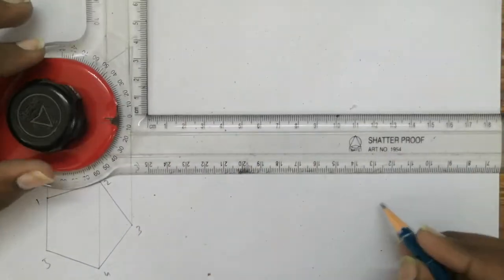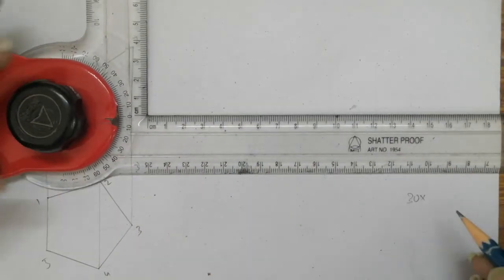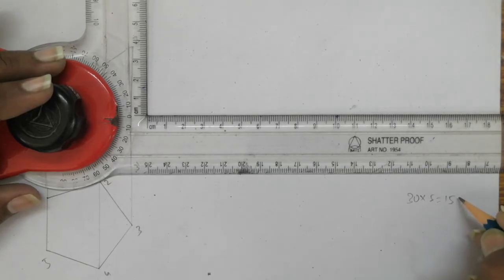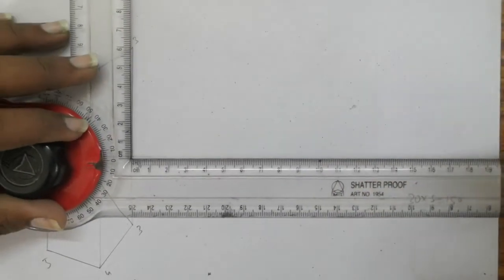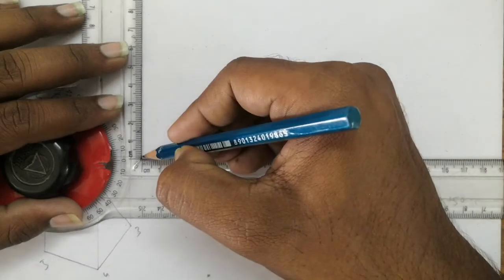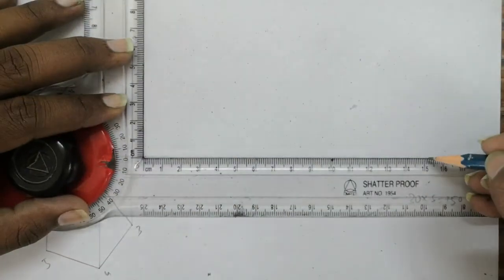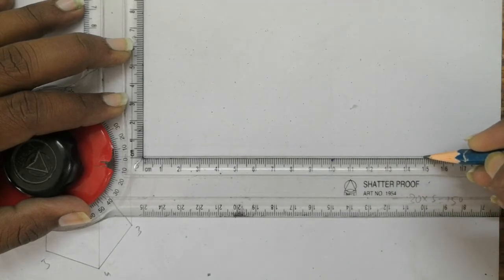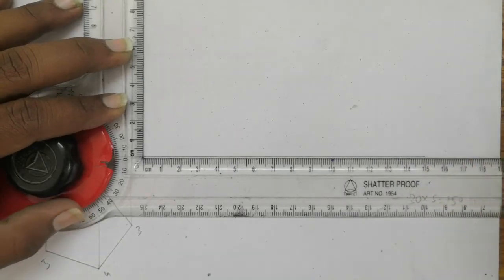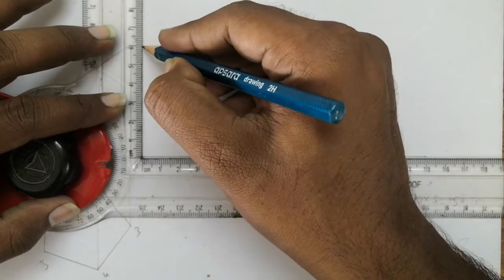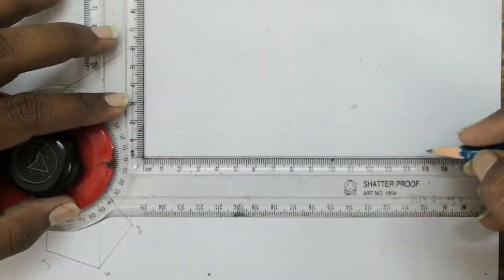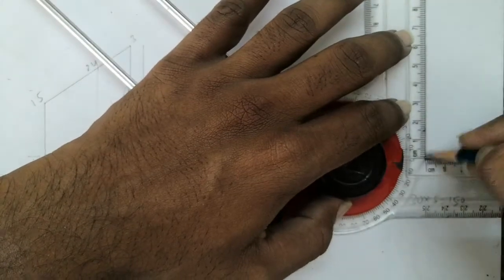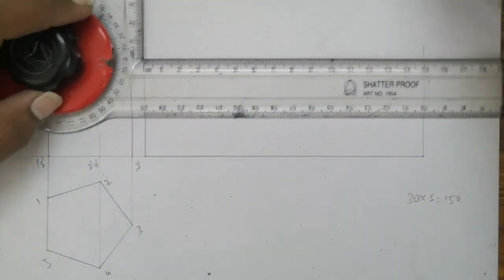Extend this line to a length of 30 into how many sides? 5. That is equal to 150mm. Choose a point here and draw a length of 150mm, that is 15 centimeters. Now complete it to a height of 60mm as the axis height or complete height of the solid is 60mm. Now join these two ends.